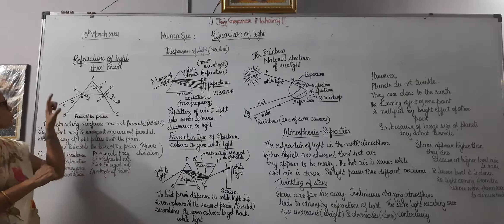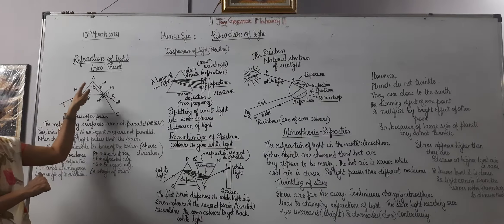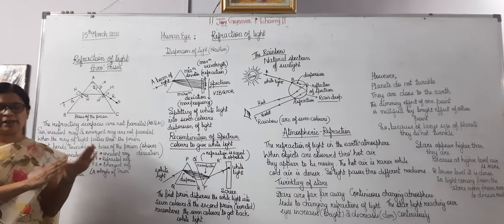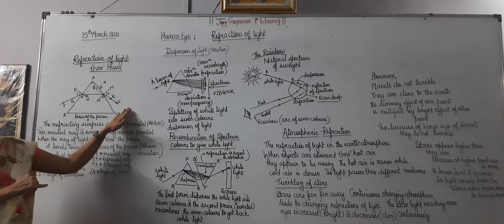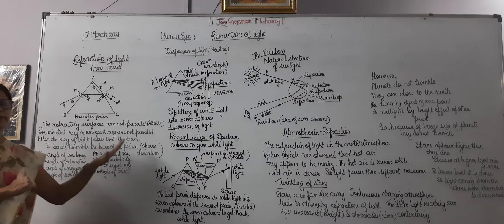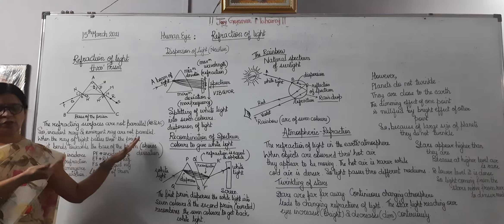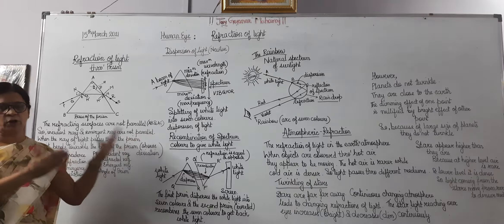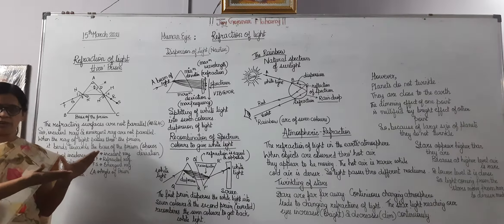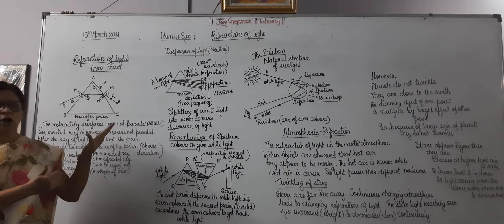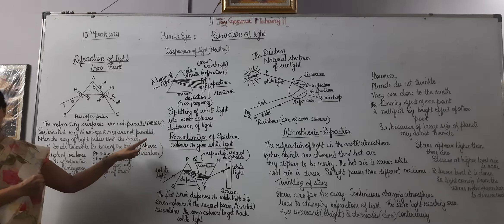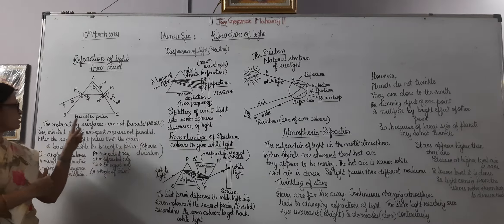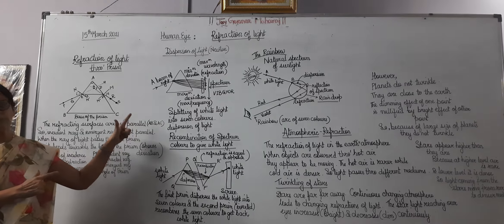These two sides of the prism, that is AB and AC, they are not parallel to each other. Therefore, the angle of incidence and the angle of emergence are not equal to each other. So the incident ray and the emergent ray are not parallel to each other. If it was a glass slab, they were parallel to each other, because the two sides of the glass slab are parallel. But AB and AC are not parallel to each other, therefore the incident ray and the emergent ray are not parallel, because the refracting surfaces are not parallel.